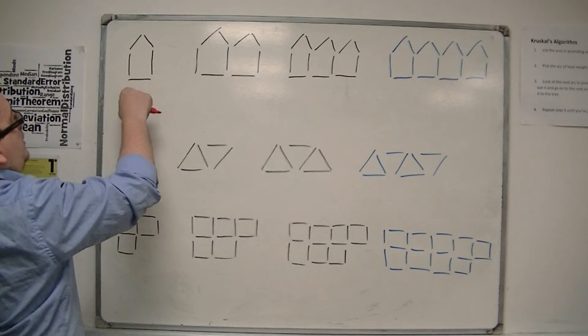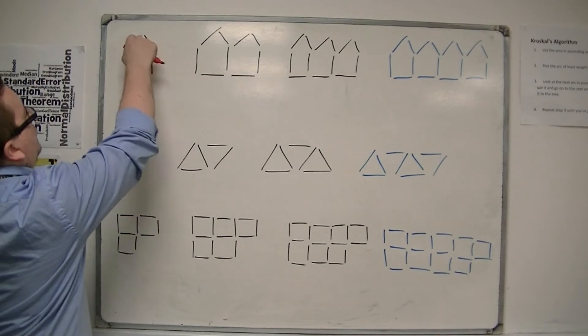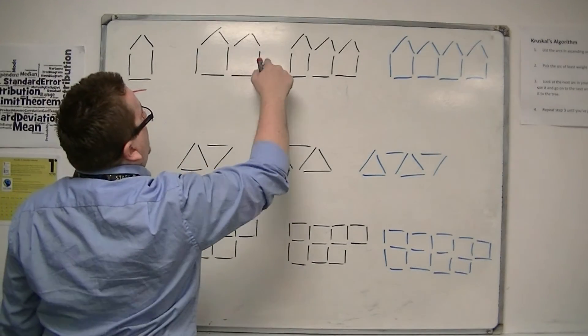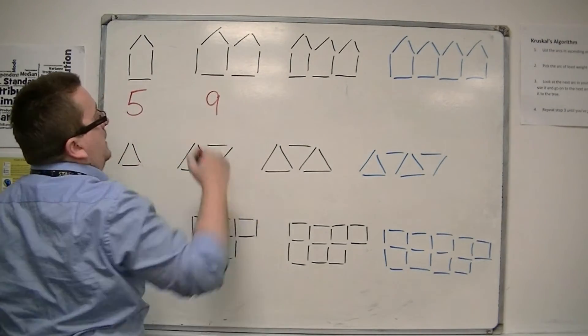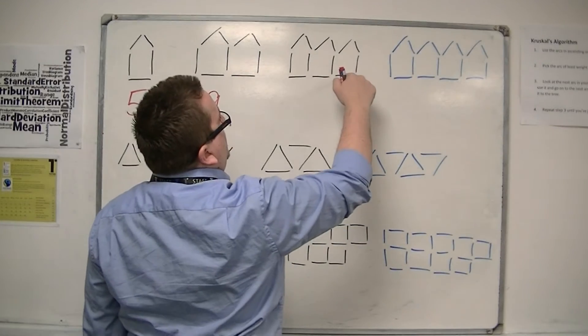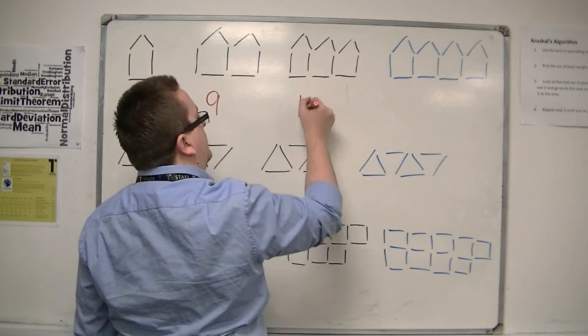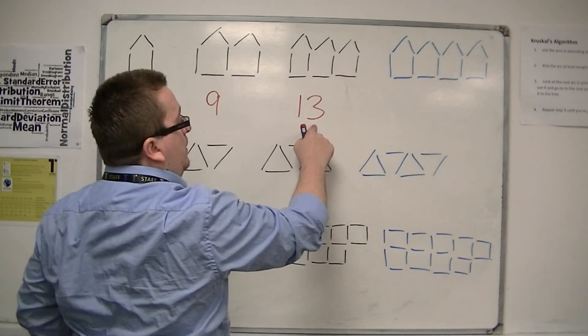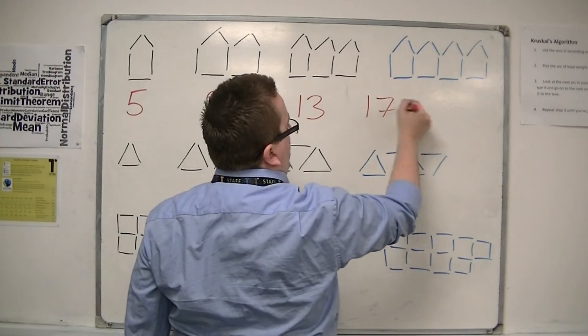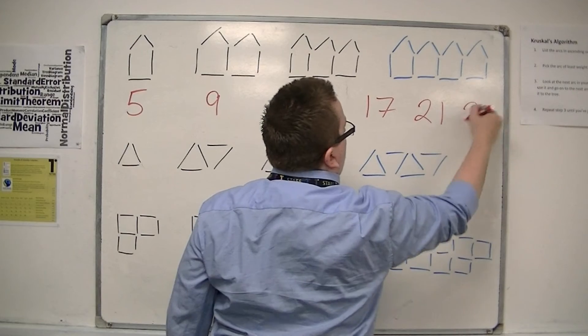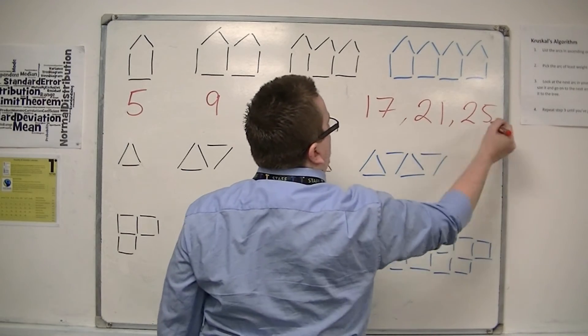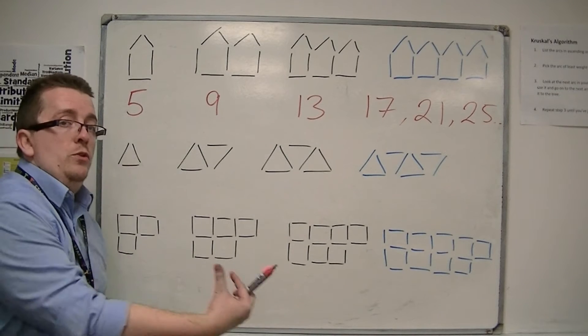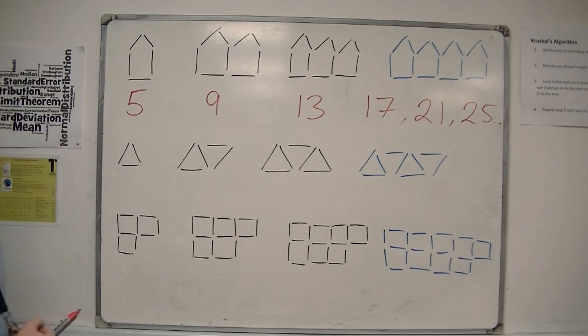So if I count up the matchsticks at each stage, one, two, three, four, five, and then the next one is five, six, seven, eight, nine, and then the next one is ten, eleven, twelve, thirteen, so I can see that I'm adding on four each time, so the next one will be seventeen, and then twenty-one, and then twenty-five, and so on. So I can continue the sequence numerically if I like.